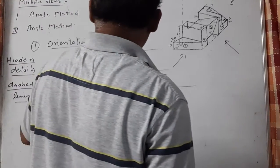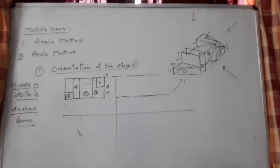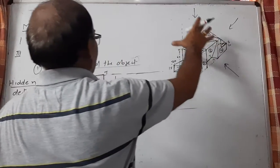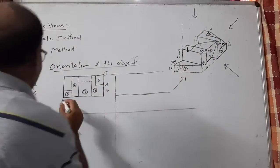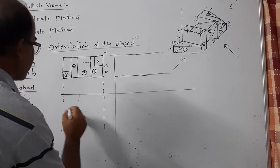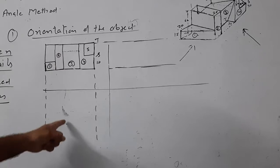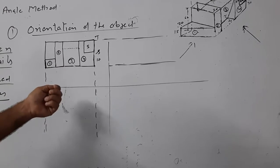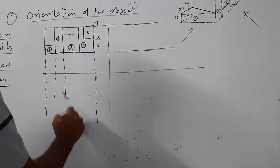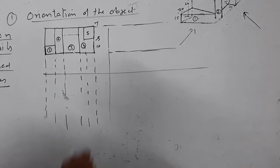Now the next important view is the plan. I have to view it from the top. If I view it from the top, the total width of the plan and elevation is the same. Every vertical line needs to be projected because it would be in use in this plane, so I am projecting all the vertical lines from here.